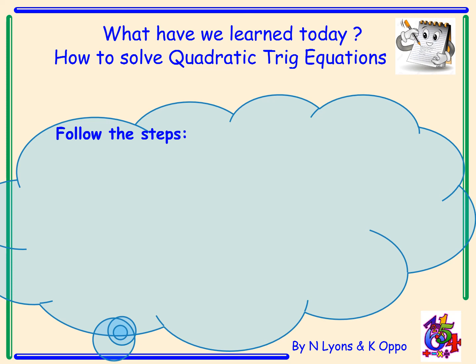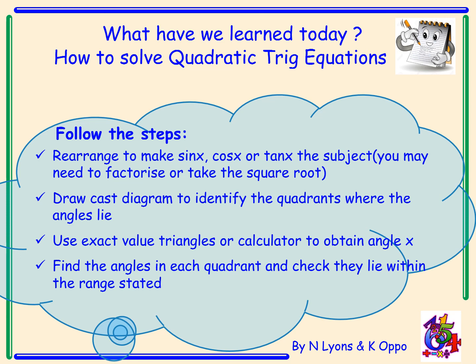Today we've learned about solving quadratic trig equations. It follows a lot of the same steps as linear trig equations — the main extension is that the rearranging at the start is slightly different, where we may need to factorise or take the square root. We still draw a CAST diagram, identify quadrants, use exact value triangles or a calculator to obtain an angle x, and ensure the solutions lie within the stated range.